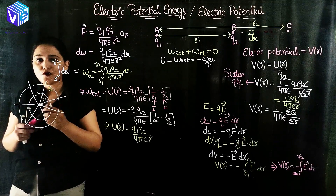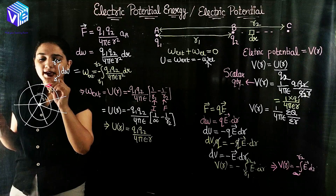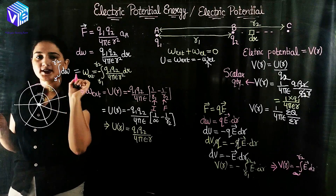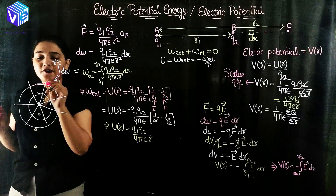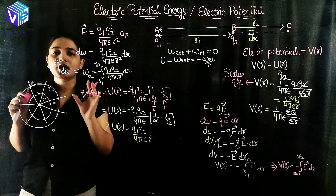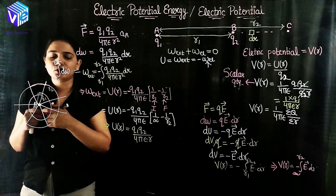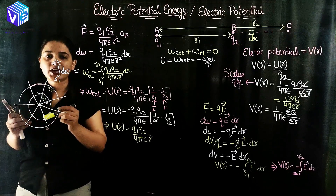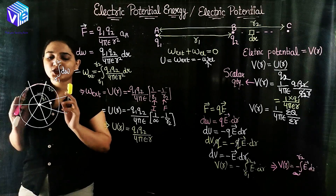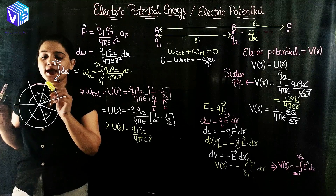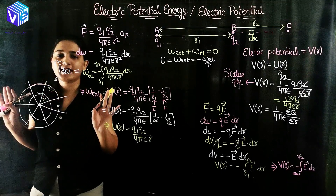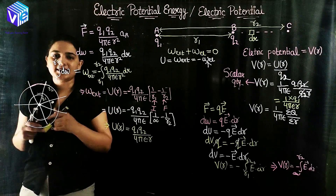If I have to move a charge along an equipotential surface only, there will be zero external work done on the charge. In this case, the change in potential energy is zero and the electric potential is zero. Moving from one potential point to another on the same surface requires no work.